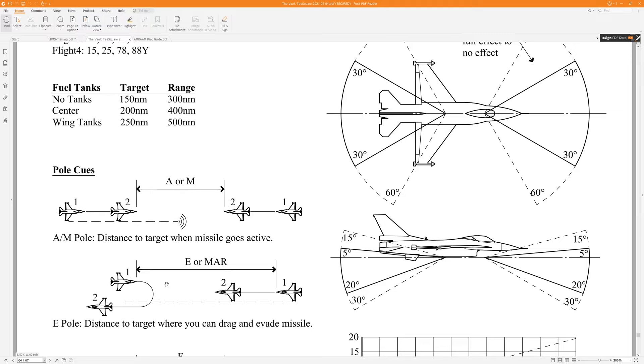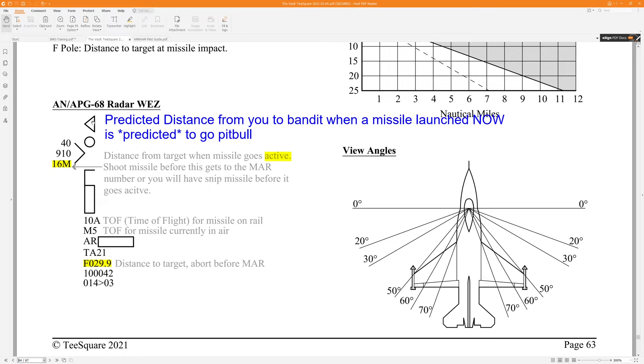If we go back into the vault, so page 64 has this wonderful diagram here. I've edited this here. This is a depiction of the dynamic launch zone for the AMRAAM at a given point in time. So this is a snapshot. At this point, the fighter, the good guy, you are 29.9 miles away from the aircraft. It gives you a note here. This is your current distance to the target. Abort before you get to the MAR. So yes, you should watch this to make sure you don't cross that minimum abort range.